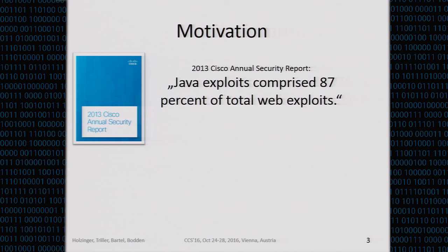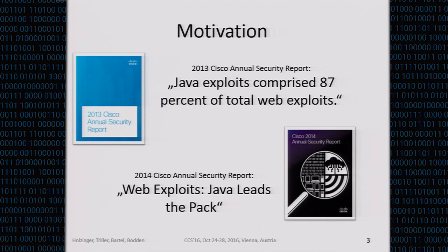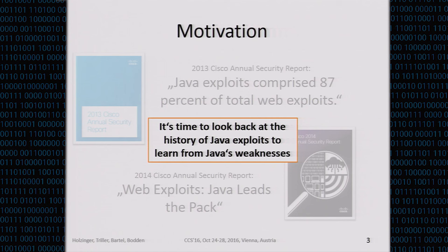Cisco in their annual report found in 2013 that it's actually 87% of web exploits that are based on Java, and in 2014 it was even worse — leading the pack. Java keeps evolving on the one hand, but also new platforms emerge like .NET and Android that share certain characteristics with Java. So we thought it's really about time to look back at the history of Java exploitation and see if we can conclude things that help us improve the security of current and future systems.